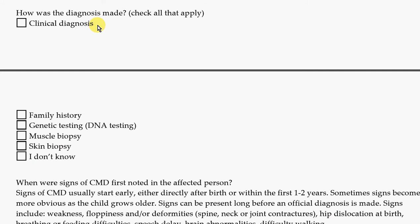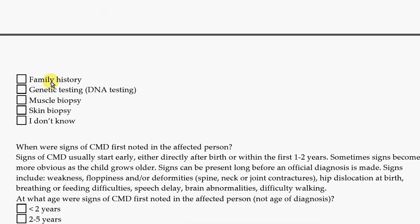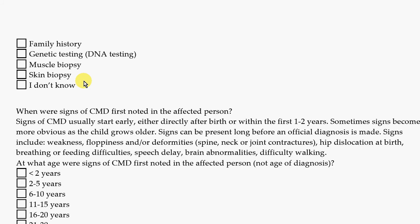A clinical diagnosis means the doctor did a physical exam and, looking at the history of the person, could say this person has such and such muscle condition. A family history means other family members have this disease, making the diagnosis easier. Or there was genetic testing done, a muscle biopsy — a surgery to remove a small piece of muscle examined under a microscope — or a skin biopsy where a small amount of skin is removed and analyzed. If you don't know how the diagnosis was made, you can click here.